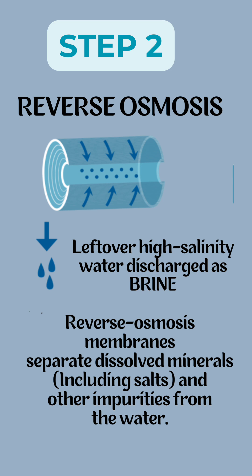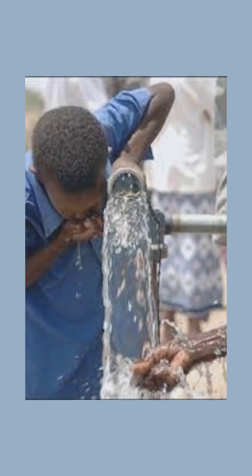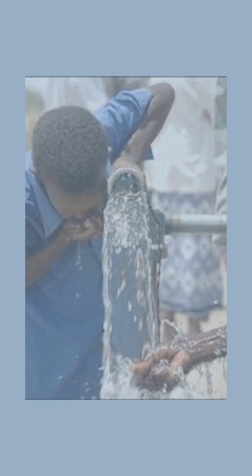Reverse osmosis forces water through membranes, while distillation heats and condenses steam. Post-treatment adds minerals and disinfects the water. The treated water is stored and distributed. Brine by-product is carefully managed to protect the environment. These projects offer a continuous water supply, essential for arid regions.